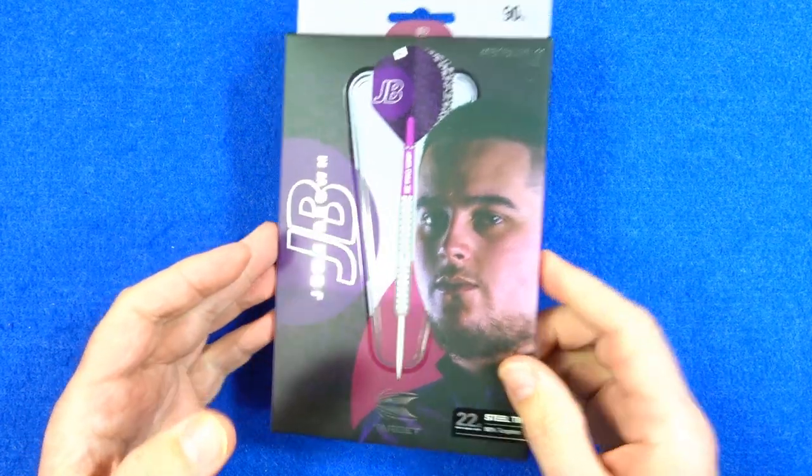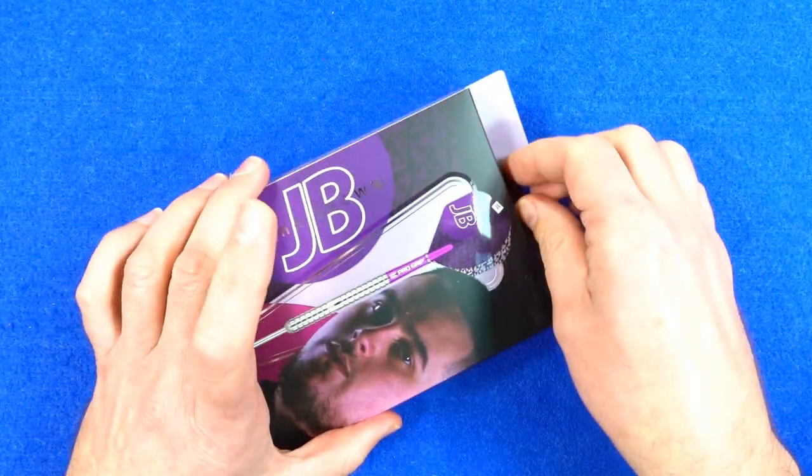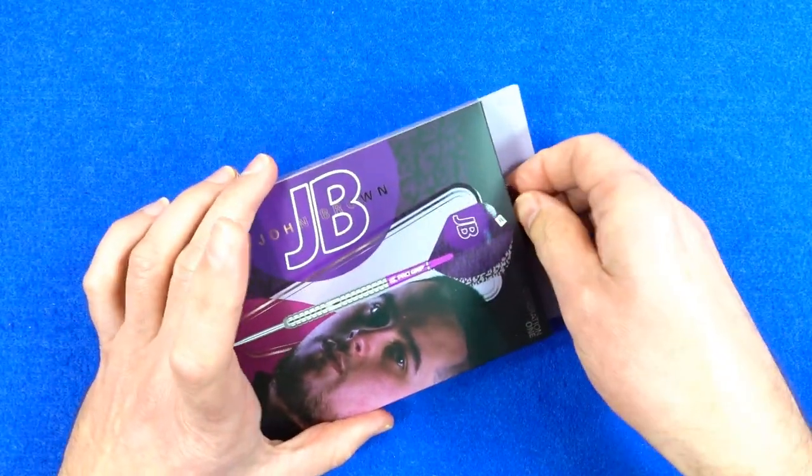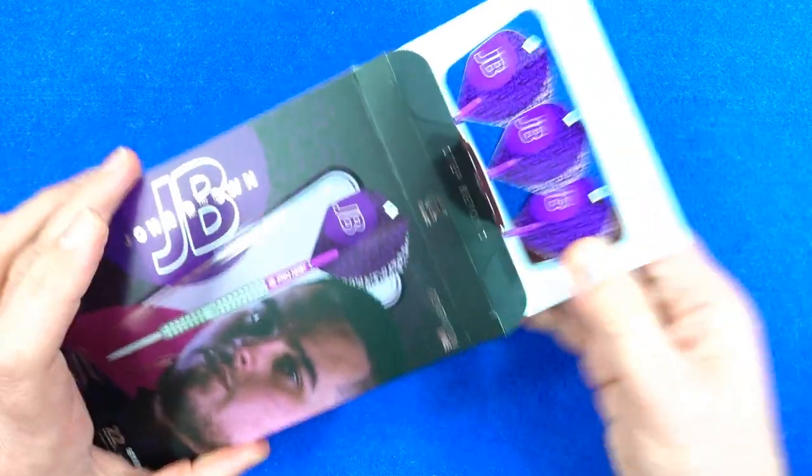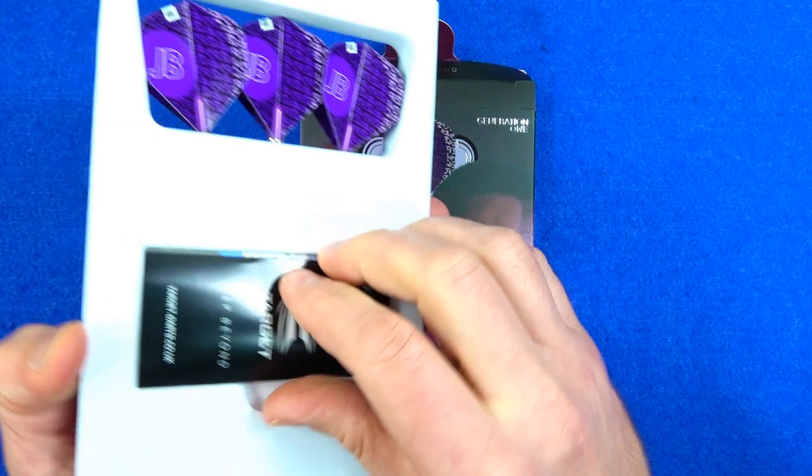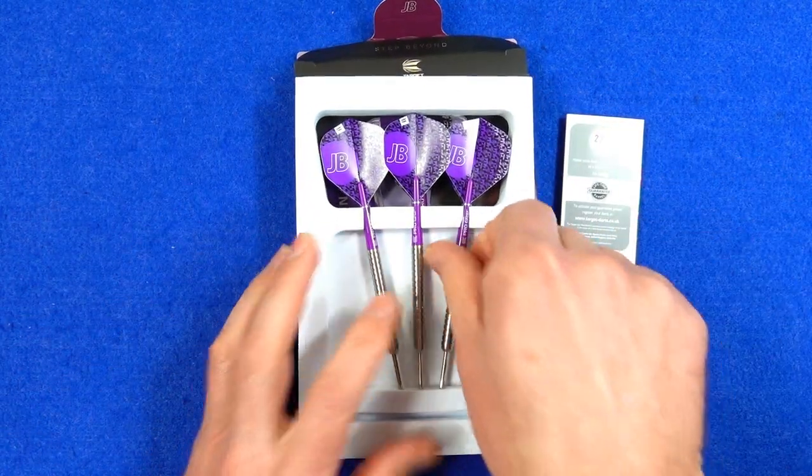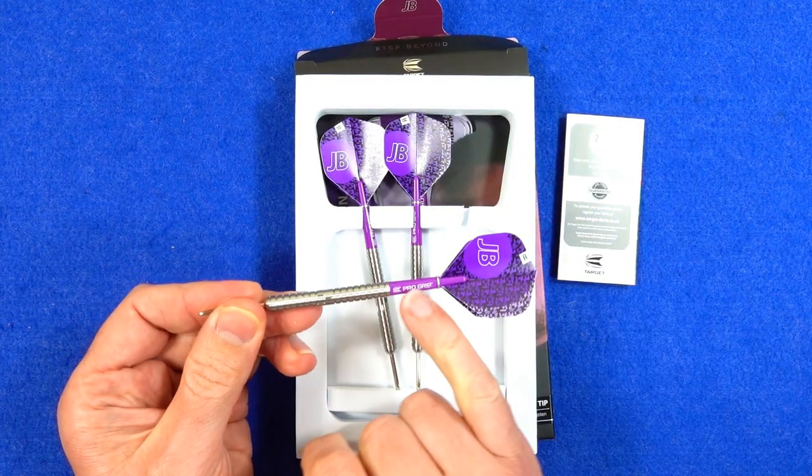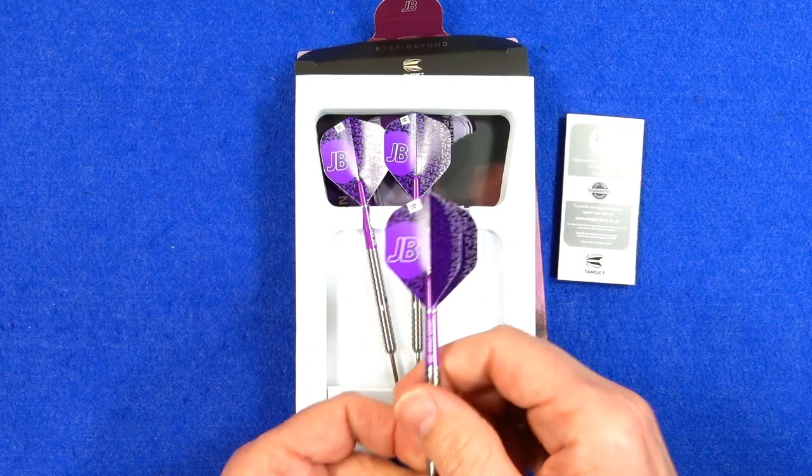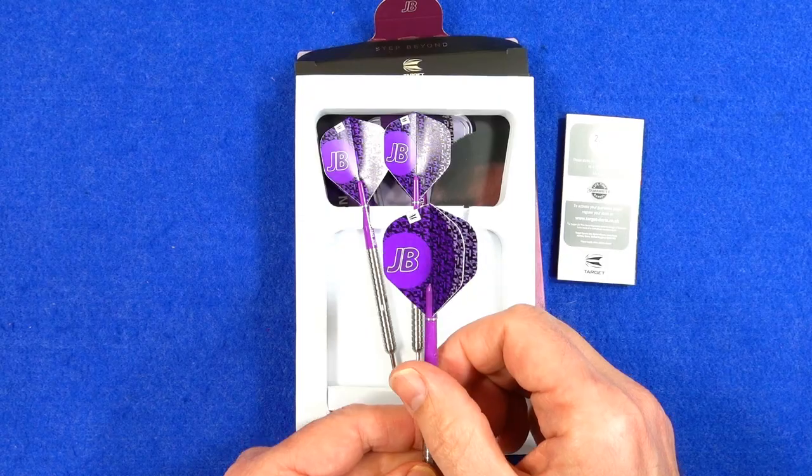So the darts come in the usual Target cardboard packaging, you've got pictures of the player around the box. Inside there's a foam insert, the Target Guarantee pamphlet, and the darts come fitted with the short Peron grip stems in purple and the John Brown purple standard signature flights.